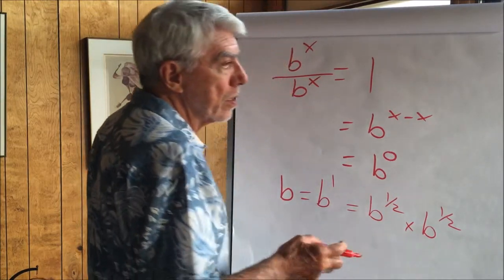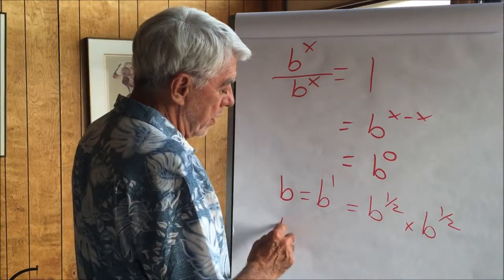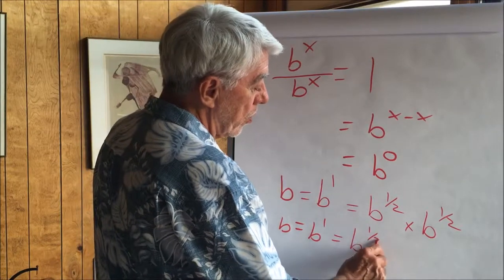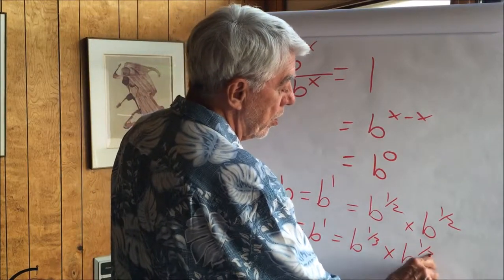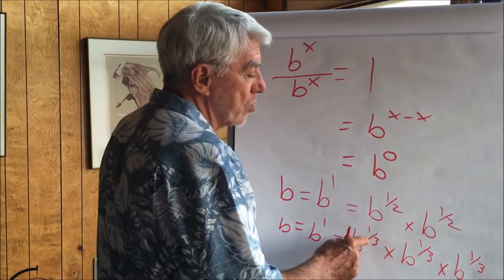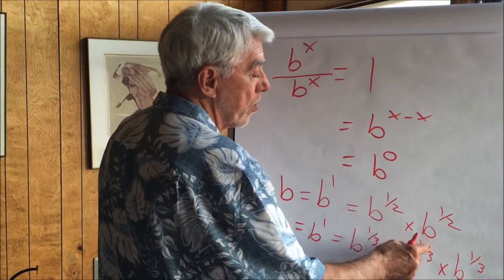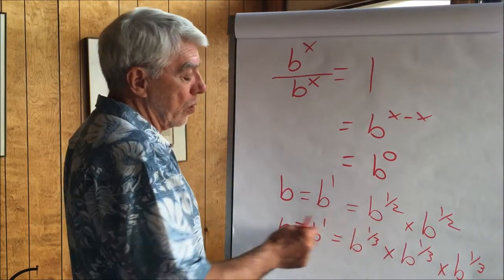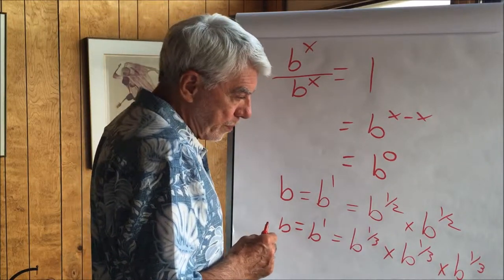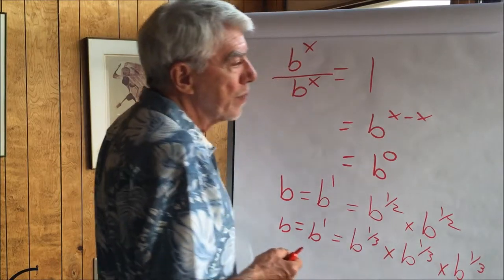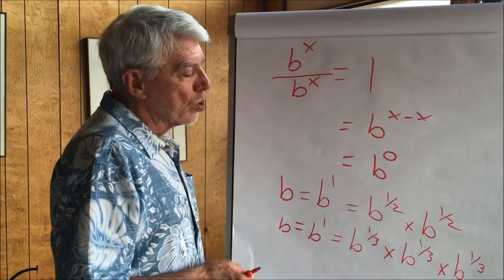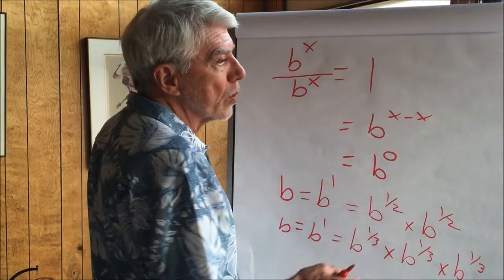We can do the same thing for the cube root. B to the first equals b to the one third times b to the one third times b to the one third, because our rule says for multiplication we add the exponents. A third plus a third plus a third gives us one. So b raised to the one third is the cube root of b.